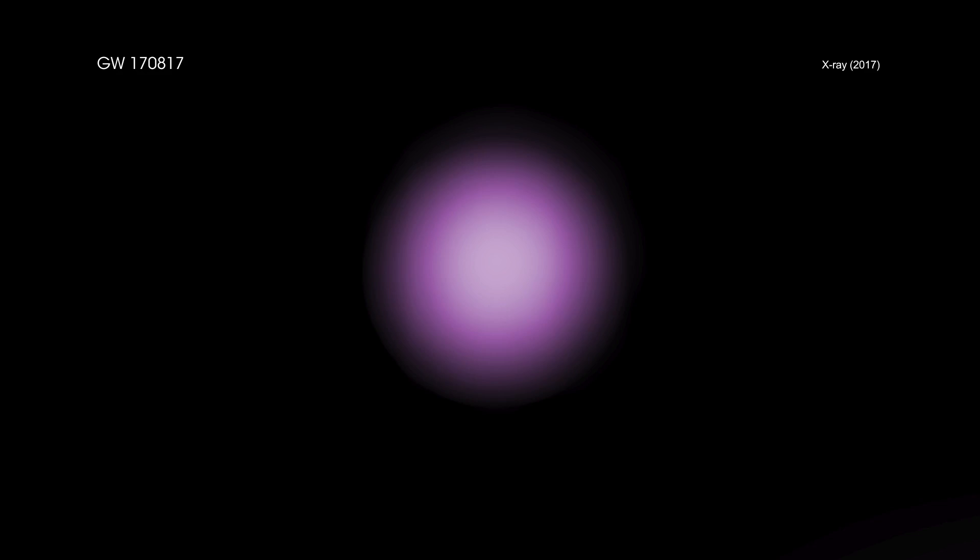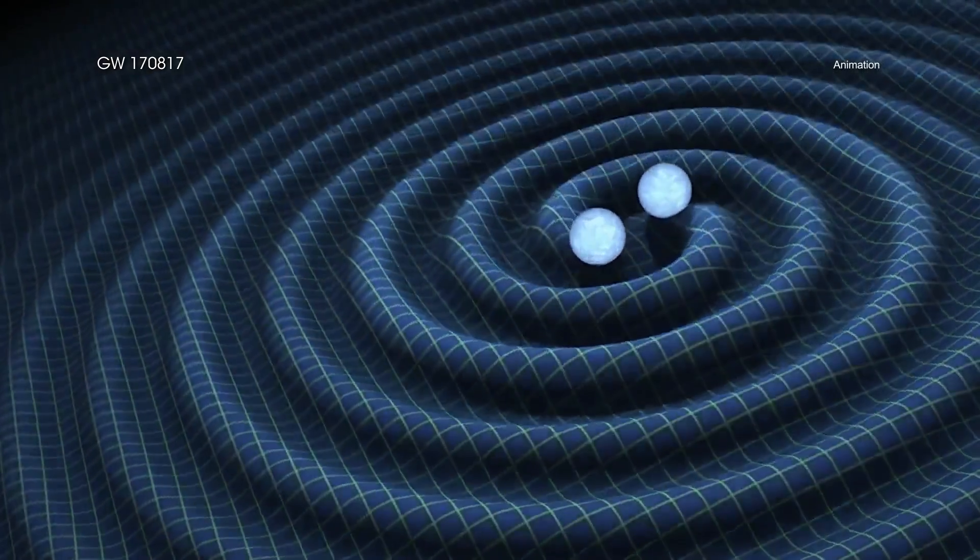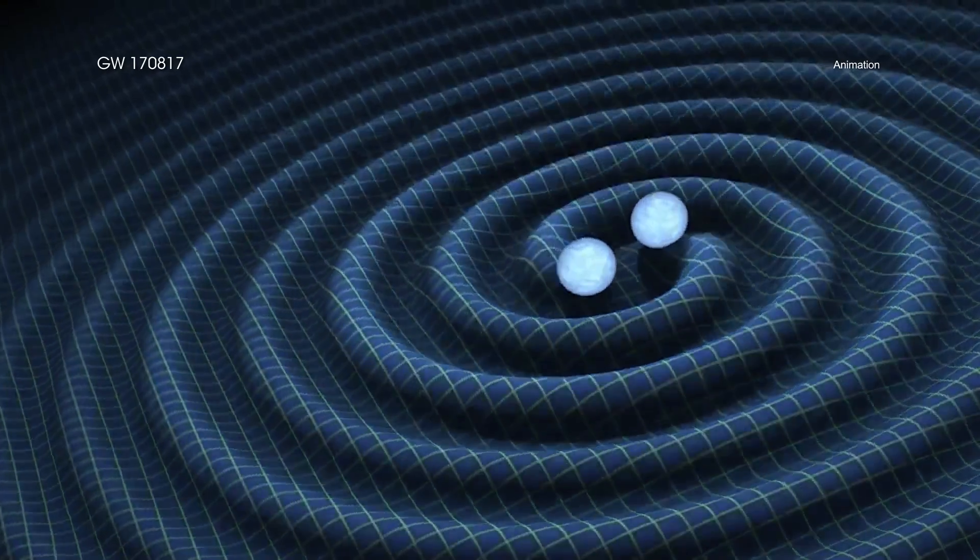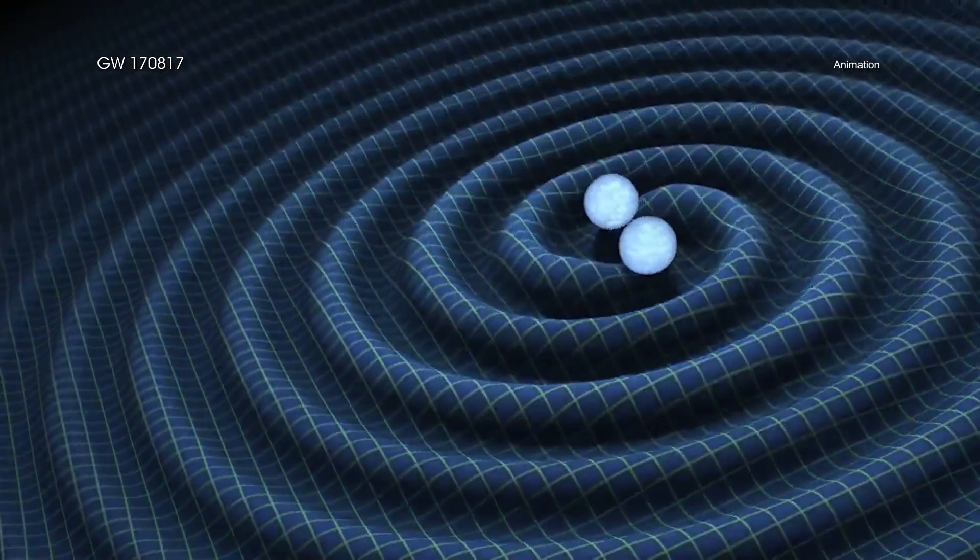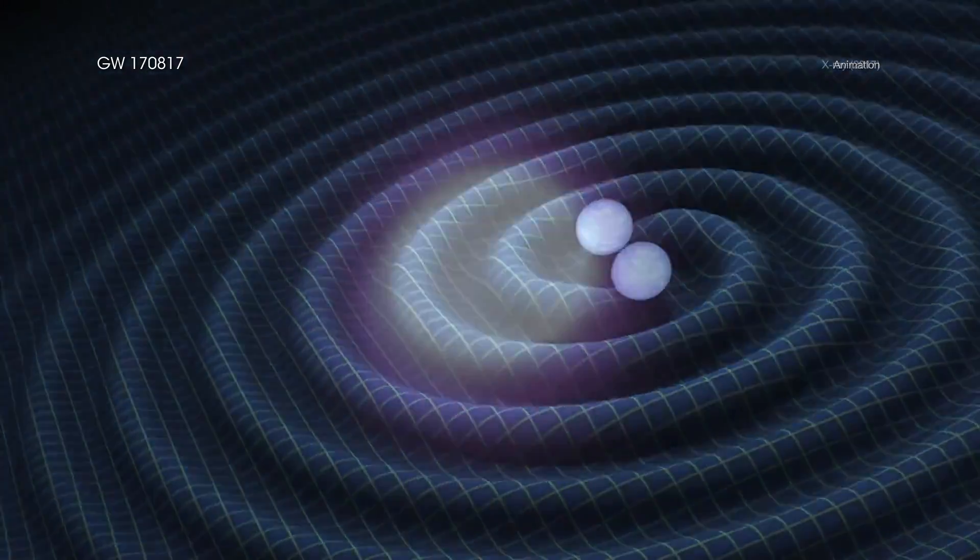GW170817. On August 8, 2017, scientists using gravitational wave detectors in the United States and Europe picked up a new signal. This object, which became known as GW170817, became the first time that gravitational waves and electromagnetic radiation, or light, were seen from the same source.